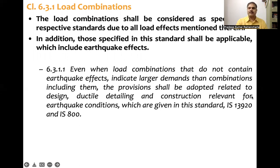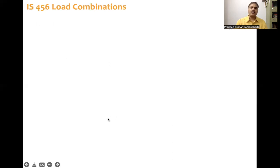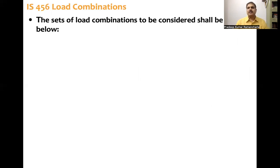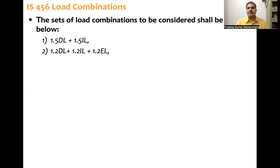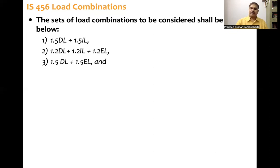Now let's look at the load combinations given in IS 456. The set of load combinations to be considered is as follows. First: 1.5 times dead load plus 1.5 times imposed load. Second: 1.2 times dead load plus 1.2 times imposed load plus 1.2 times earthquake load. Third: 1.5 times dead load plus 1.5 times earthquake load. Fourth: 0.9 times dead load plus 1.5 times earthquake load. The 1.5 factor is a partial safety factor or load factor.